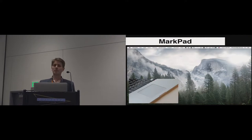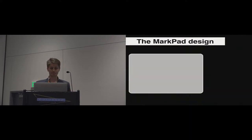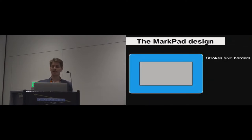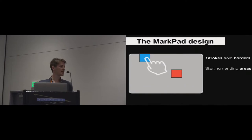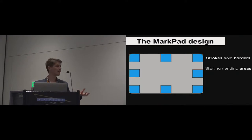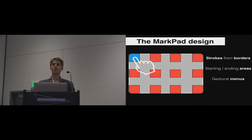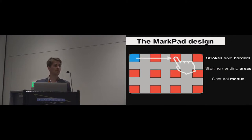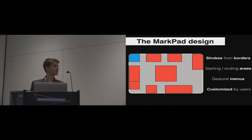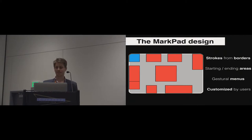Let me detail a bit more about the design of Markpad. The idea is that strokes have to start from the borders of the touchpad, and a stroke is just defined by a starting area and an ending area. Several starting areas can be defined, and several ending areas can also be defined for one starting area, which means that we can have gestural menus. From a starting area, several strokes can be defined, and then the user can perform them. Finally, the user can customize his own areas — starting and ending areas — their positions and the size of the areas.